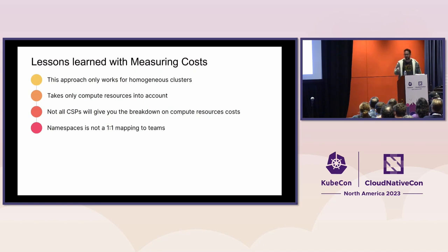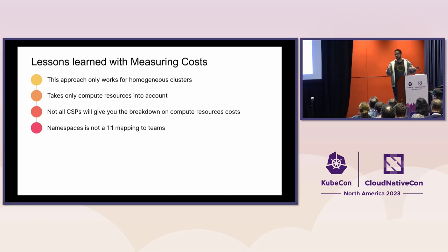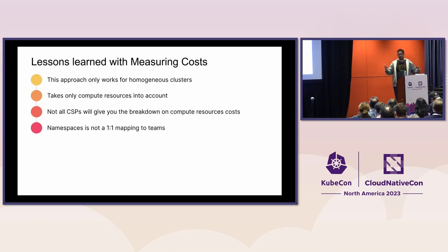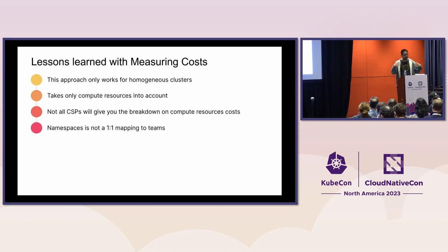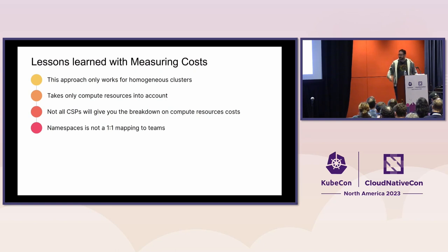We wrote about this in our blog post and adopted OpenCost — go check that out if you don't believe the 90% accuracy. The other current limitation is this only covers compute resources: CPU, memory, persistent volumes. Within Grafana we use a lot of object storage, which has a very different cost model, and we want to associate that to teams as well. It's something we built internally and we're not quite sure what we'll do with it, but there will be something from that.